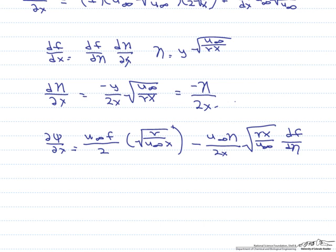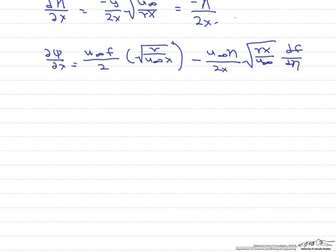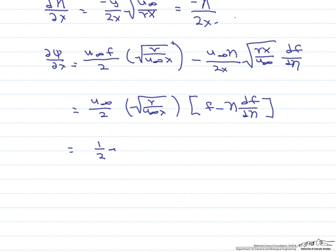So we can simplify this further. One half times the square root of u infinity times the kinematic viscosity divided by x, f minus eta df d eta.